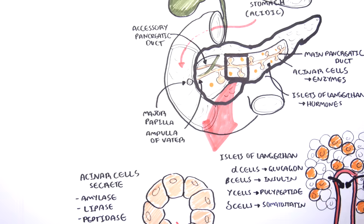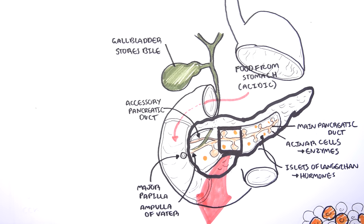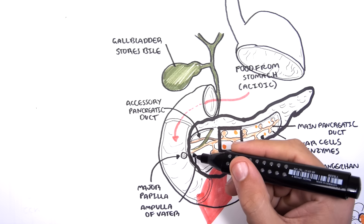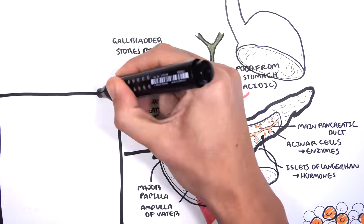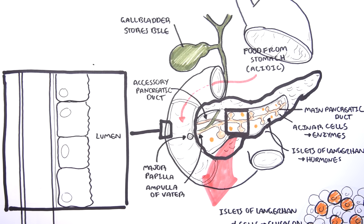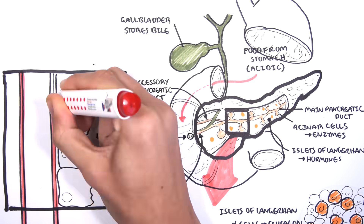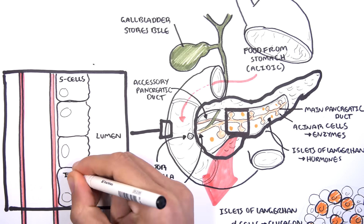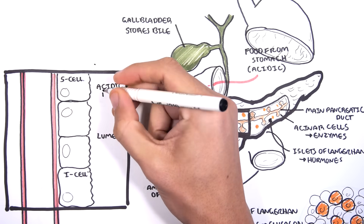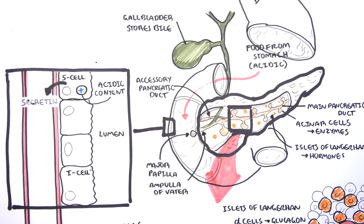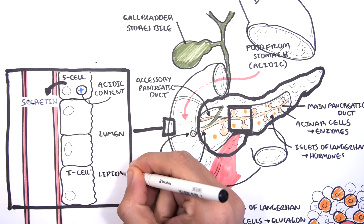To understand how digestive enzymes are regulated, imagine food coming down from the stomach into the duodenum. In the small intestine there are two important cell types: S cells and I cells. When acidic food from the stomach arrives in the duodenum, it stimulates the S cells to produce secretin.